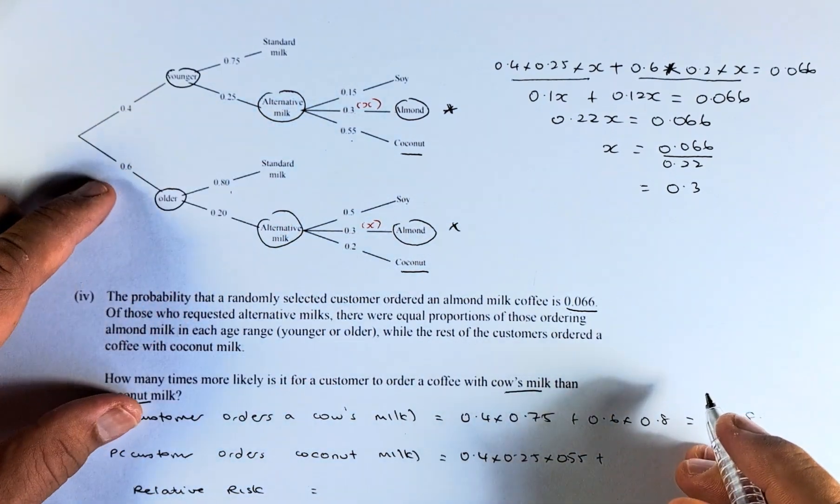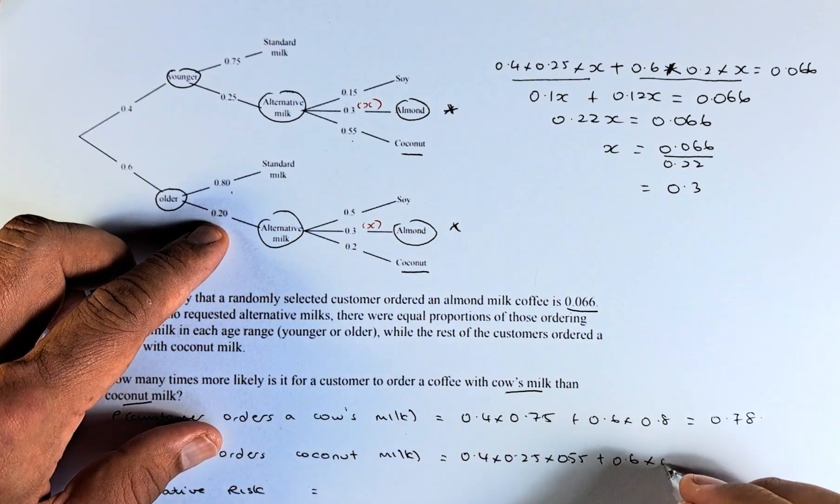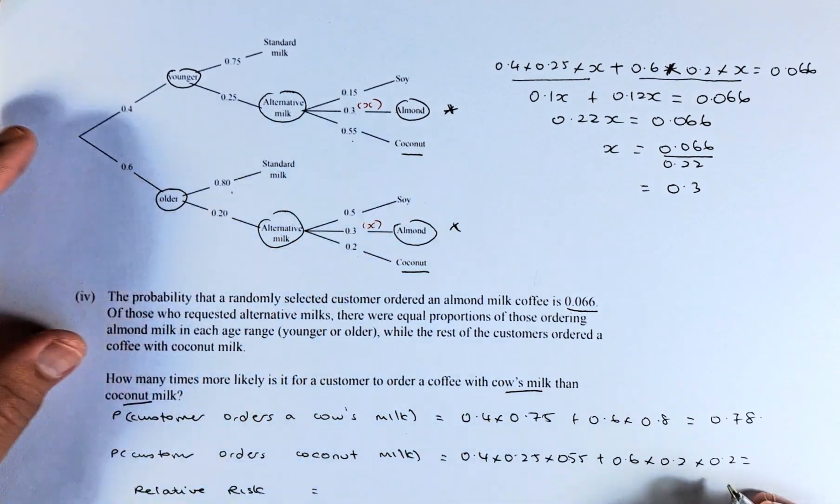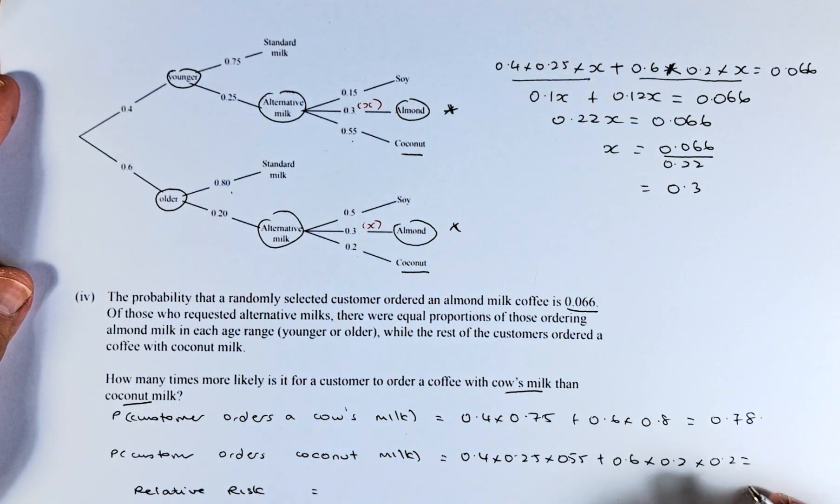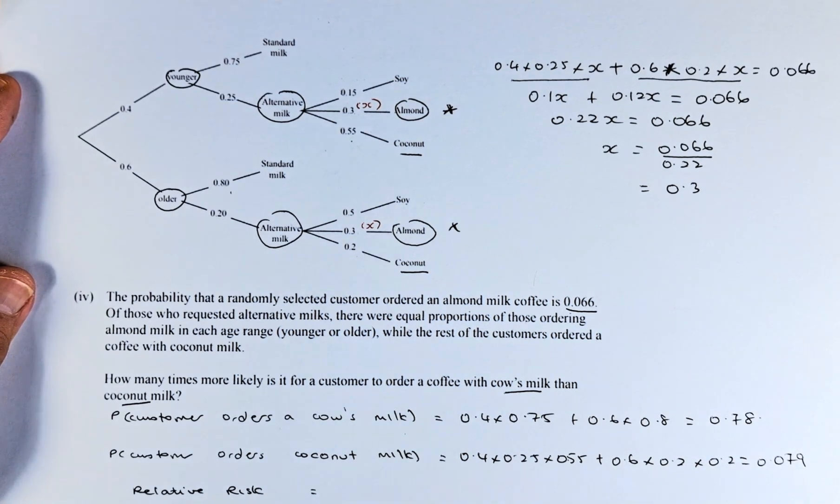And then the second person is going to be the older group, 0.6 x 0.2 x 0.2. Put in your calculator and the answer is going to be 0.079. So now the relative risk is you take